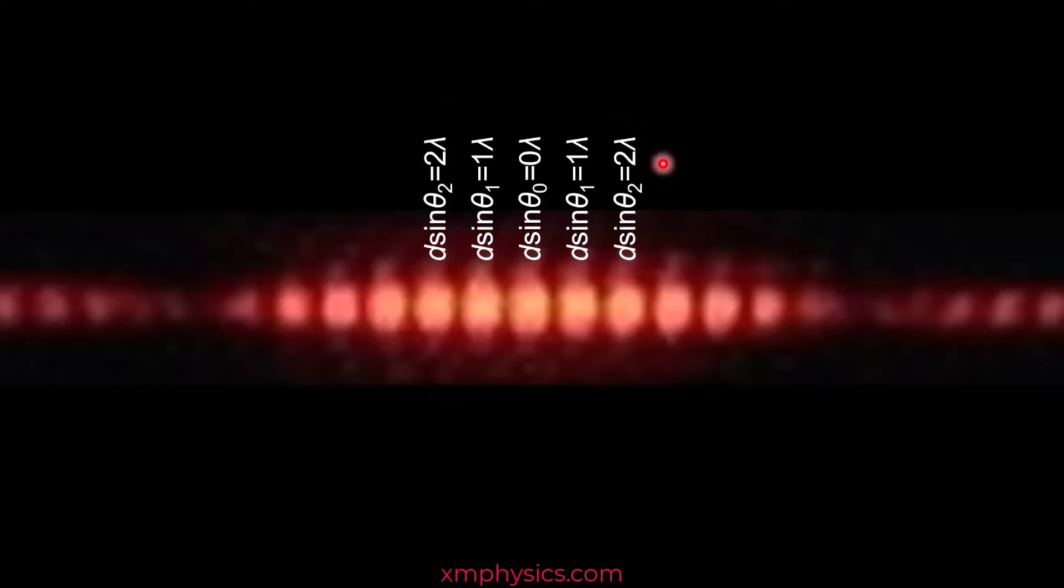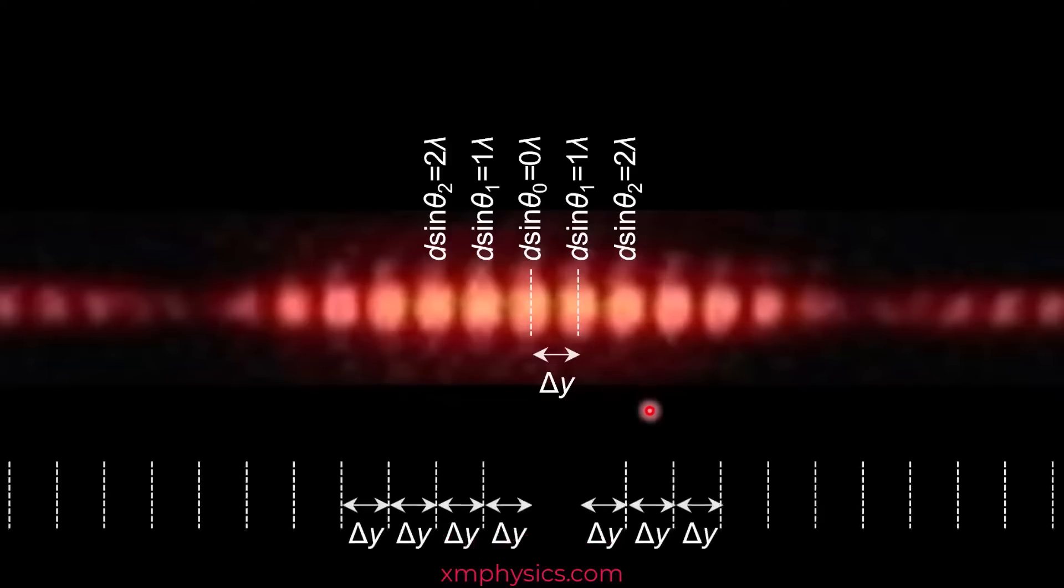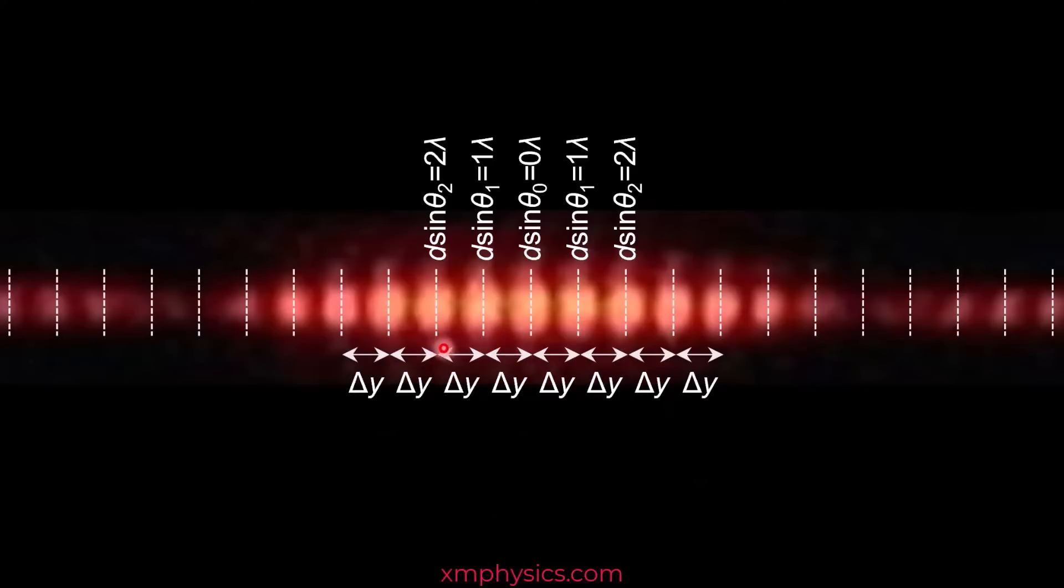Okay, now we can move on to the new thing. We are going to talk about the fringe separation. So I'm talking about the distance between two adjacent bright fringes. I'm going to call it delta y. Do you notice that the bright fringes are equally spaced out? The fringe separation is constant. That looks interesting, doesn't it? So why not we try to derive the formula for delta y?